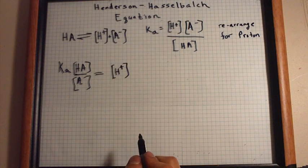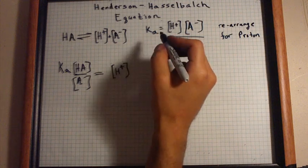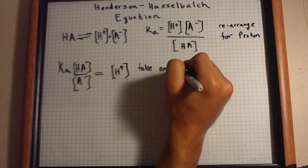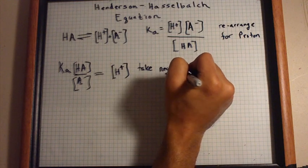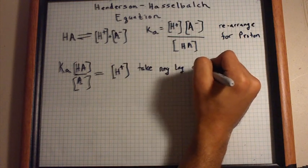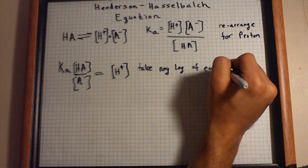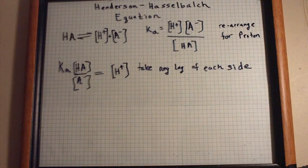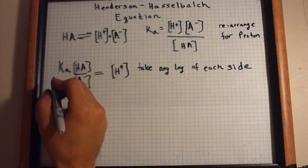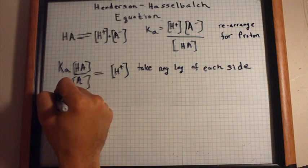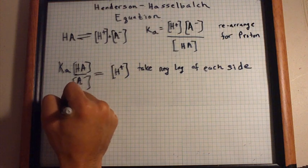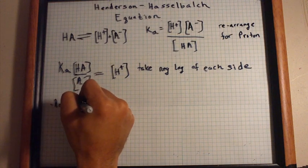Okay, now we're going to take the negative log of each side. That's legal, since we're doing it to both sides, it's negative log of Ka...